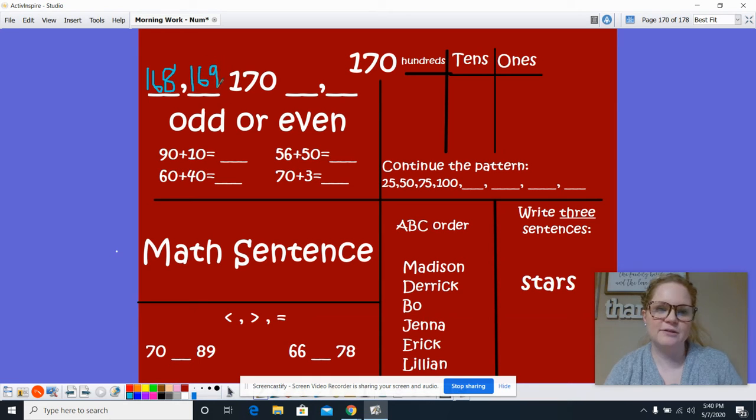The two numbers that go after 170 are 171 and 172. Is 170 odd or even? It is even because it ends in a zero, two, four, six, eight. 90 plus 10 is 100. Simply just count by tens from 90, add 10 more.